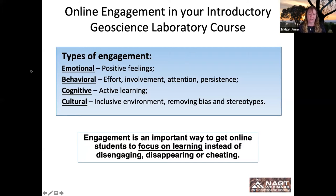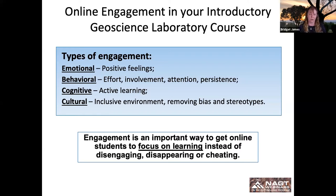Engagement is super important to making sure students focus on learning. You're not going to be right there in front of them in most cases, so having them want to be there will help. The types of engagement I want to cover briefly are emotional, behavioral, cognitive, and cultural. Emotional is the positive feelings your students will have towards your course. Behavioral is the effort, involvement, attention, and persistence. Cognitive is the active learning. And cultural is the inclusive environment — removing bias and stereotypes from your courses. This is a really important way to get online students to focus on learning instead of disengaging, disappearing, or cheating.